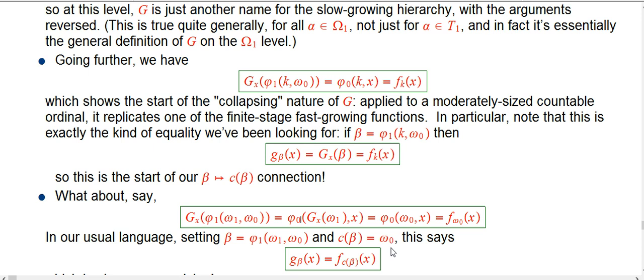If you collapse that with helper argument x, that's the same thing as demote the phi to just a good old phi naught, which is the fast growing hierarchy. Demote the omega one, which we know is just omega naught. Demote the omega naught, which brings the x explicitly into the picture.